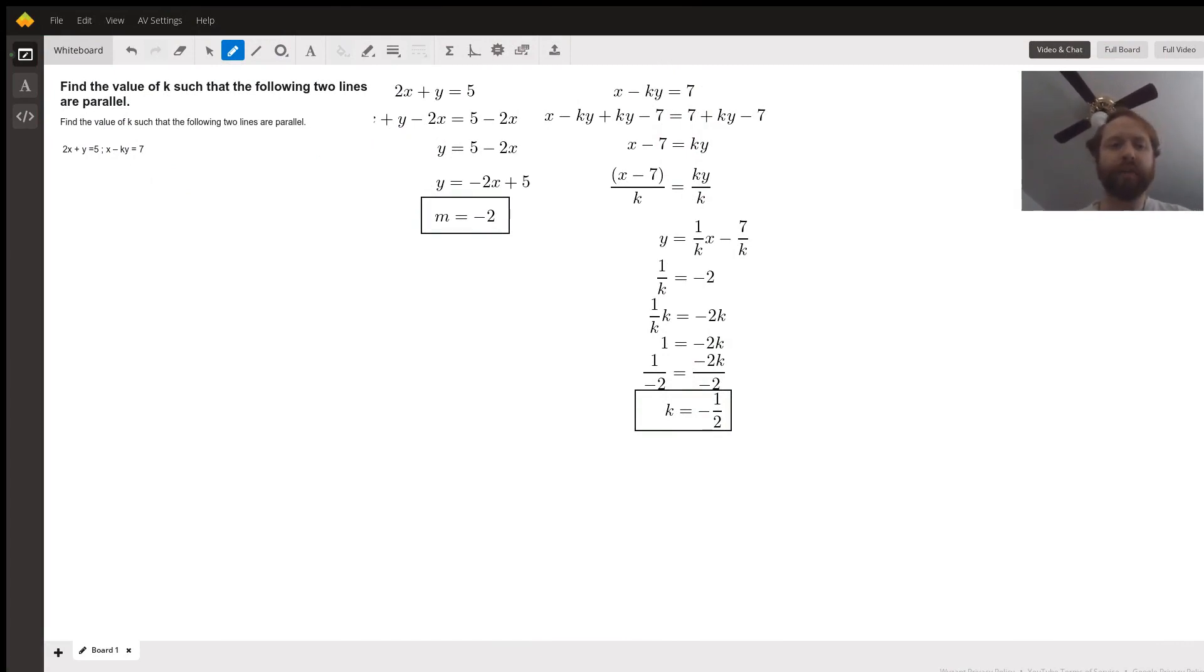If we take the first equation that does not have a k in it and get it into slope-intercept form, we'll subtract 2x from each side to get y equals 5 minus 2x. Switching the order gives us y equals negative 2x plus 5. So our m in y equals mx plus b is negative 2, and we want our m for the other equation to also be negative 2.